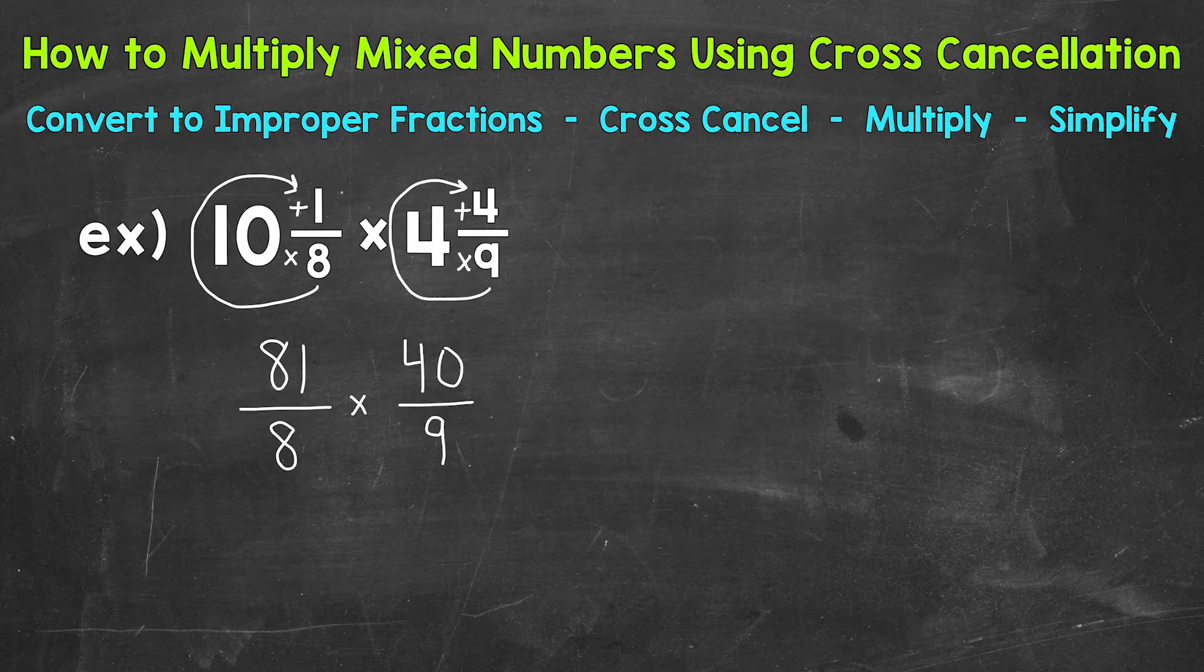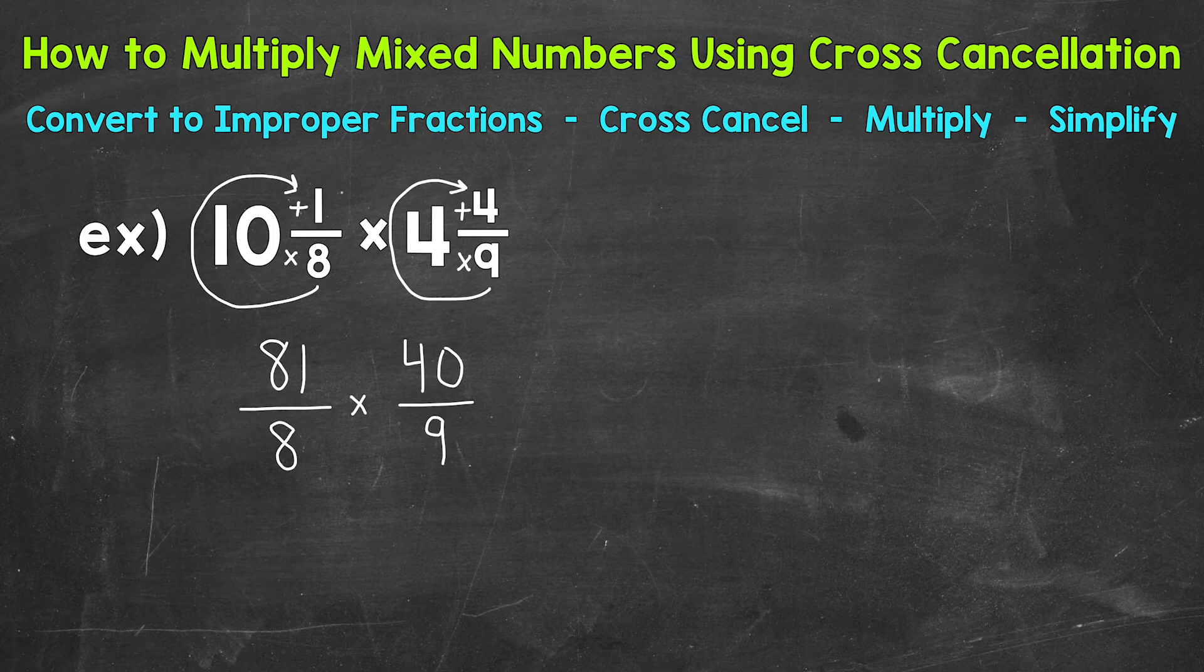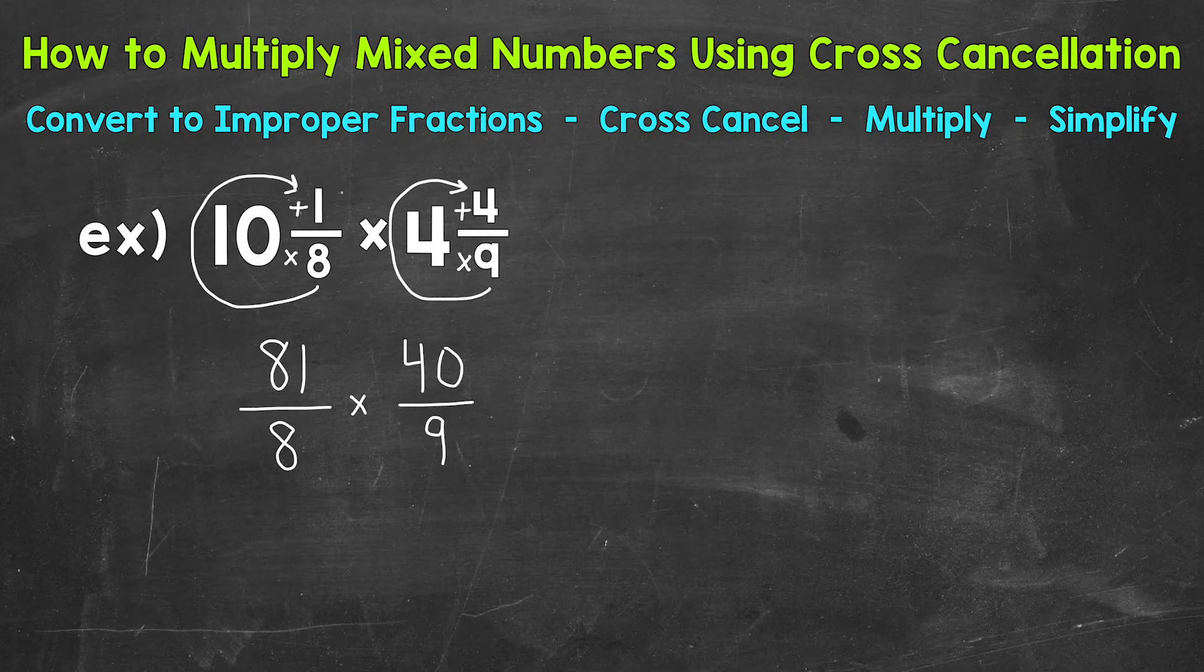At this point, we can multiply straight across. So we can do 81 times 40 and then 8 times 9. But we can use cross cancellation. And this is a way to simplify fractions before multiplying. It gives us smaller and easier numbers to work with. Therefore, a simpler problem to solve. We cross cancel by looking for common factors between the numerators and denominators. So the top and bottom. Think of it as simplifying fractions, but we can look diagonally as well.